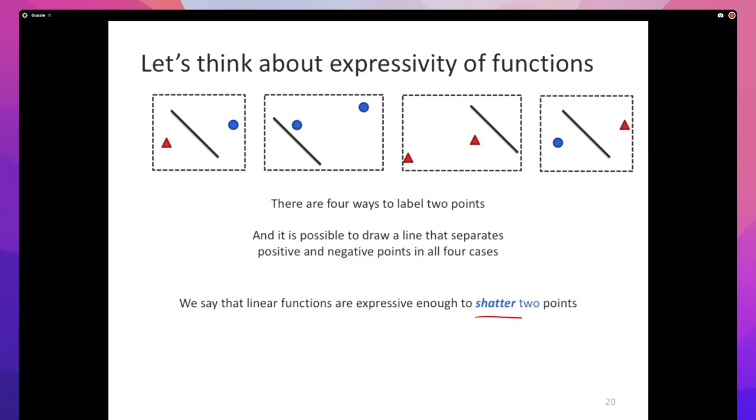This property — that it's possible to find a linear classifier that separates every labeling of these two points — is called shattering. We say that linear functions in two dimensions are expressive enough to shatter two points. Shattering means it's possible to find a classifier that can perfectly separate every possible labeling of those points.